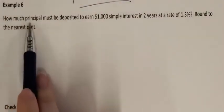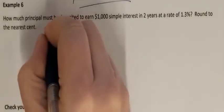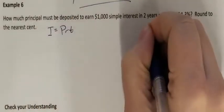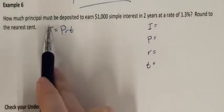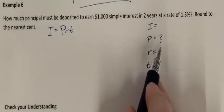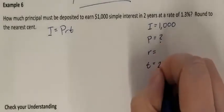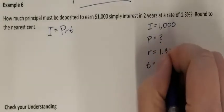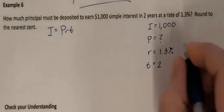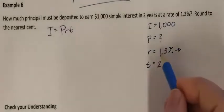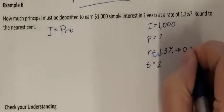Example 6. How much principal must be deposited to earn $1,000 in simple interest? This one's different — we're still using I = PRT, but this is asking how much principal. I don't know the principal. The rate is 1.3%, which I need to convert to a decimal by moving the decimal point 2 to the left, giving 0.013.